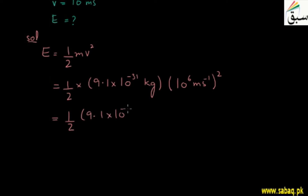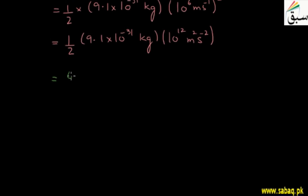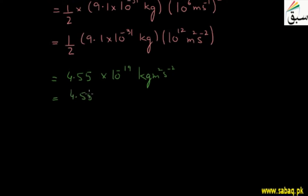Now let us find the energy. After calculating, the value is 4.55 into 10 raised to the power minus 19 kilogram meter square per second square. We know that these units form Joules. So, the kinetic energy is 4.55 into 10 raised to the power minus 19 Joule.